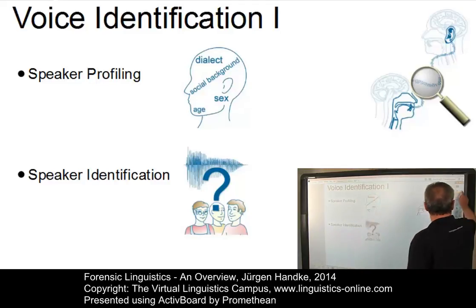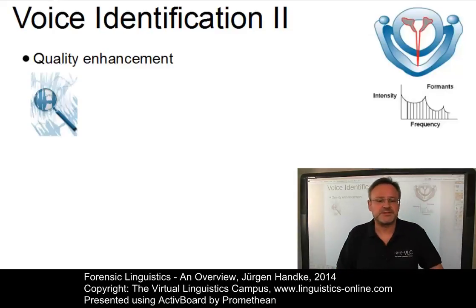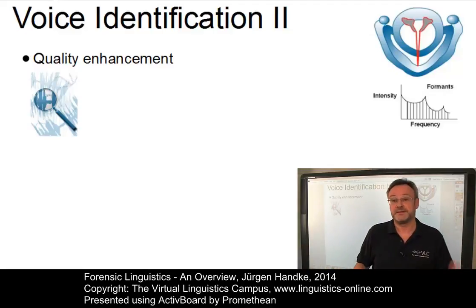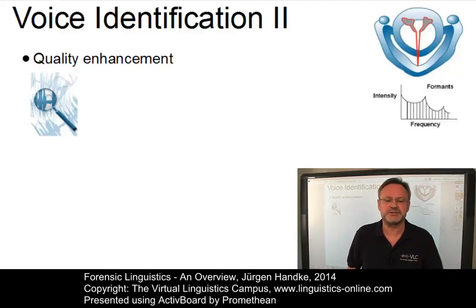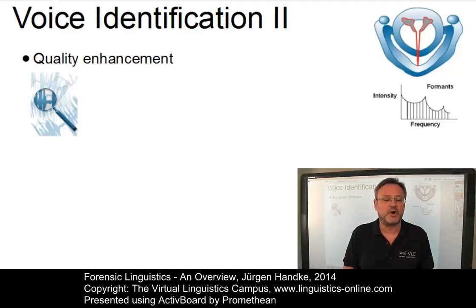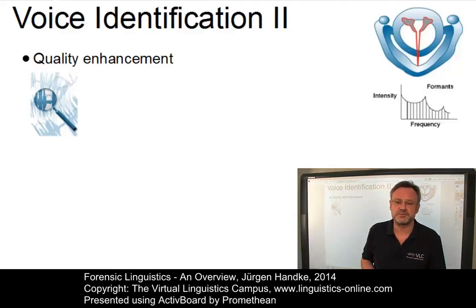There are also straightforward technical issues, for example quality enhancement, that is the decoding of disputed utterances. Criminal recordings usually have very poor quality, often very noisy. Therefore, there is often ample scope for a defendant to challenge the prosecution's version of what was actually said. Forensic phoneticians may be asked to prepare a report on the quality of the recording and the intelligibility of the speech, to convert recordings against noise such as traffic noise, to establish the identity of a word or phrase, and to prepare an objective transcript of the recording.